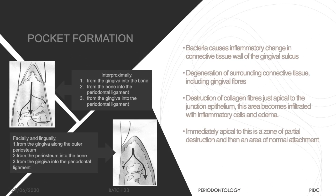In the last class we saw how pocket formation occurs — two mechanisms were discussed. One mechanism involves an increase in polymorphonuclear neutrophils (PMNs) passing through the junctional epithelium into the sulcus; when PMN counts exceed 60%, there is a break in the continuity of the epithelial attachment. The other model involves inflammation causing collagen destruction apical to the junctional epithelium, creating a space whereby the junctional epithelium starts migrating apically. This is the basic mechanism of pocket formation.